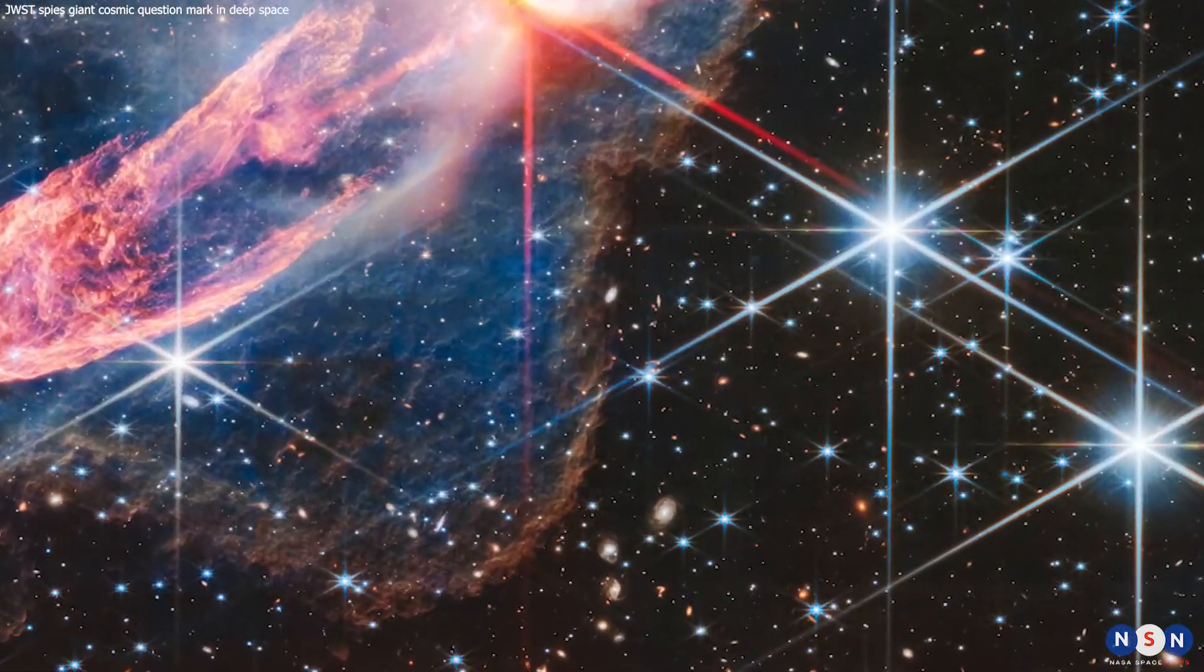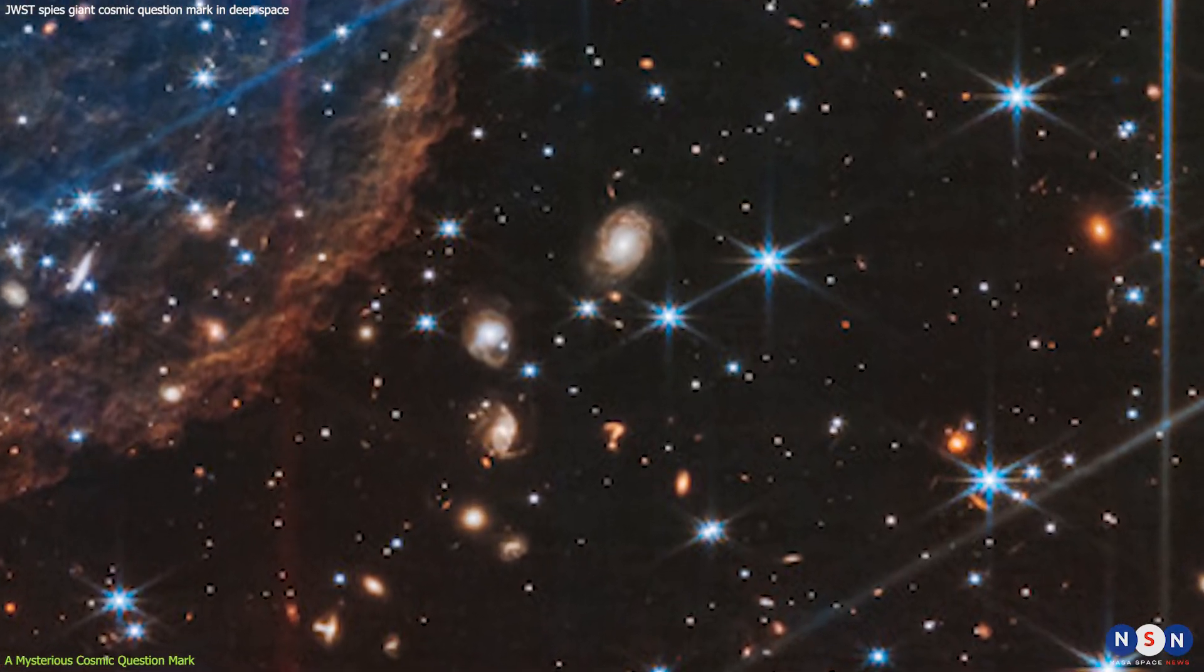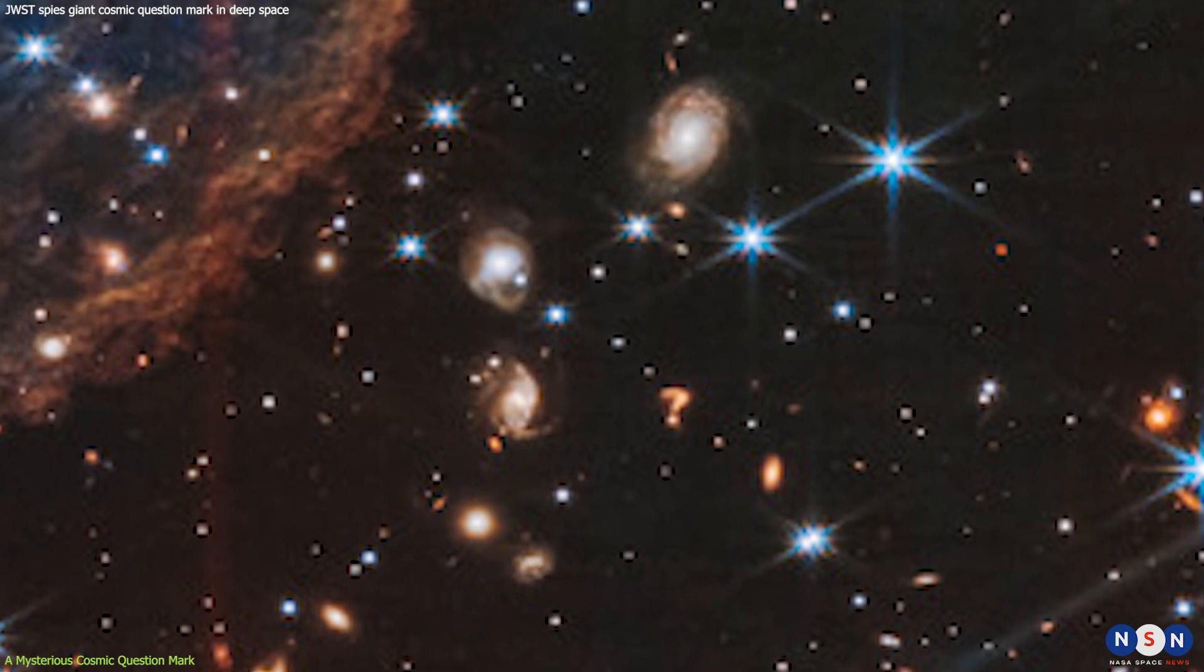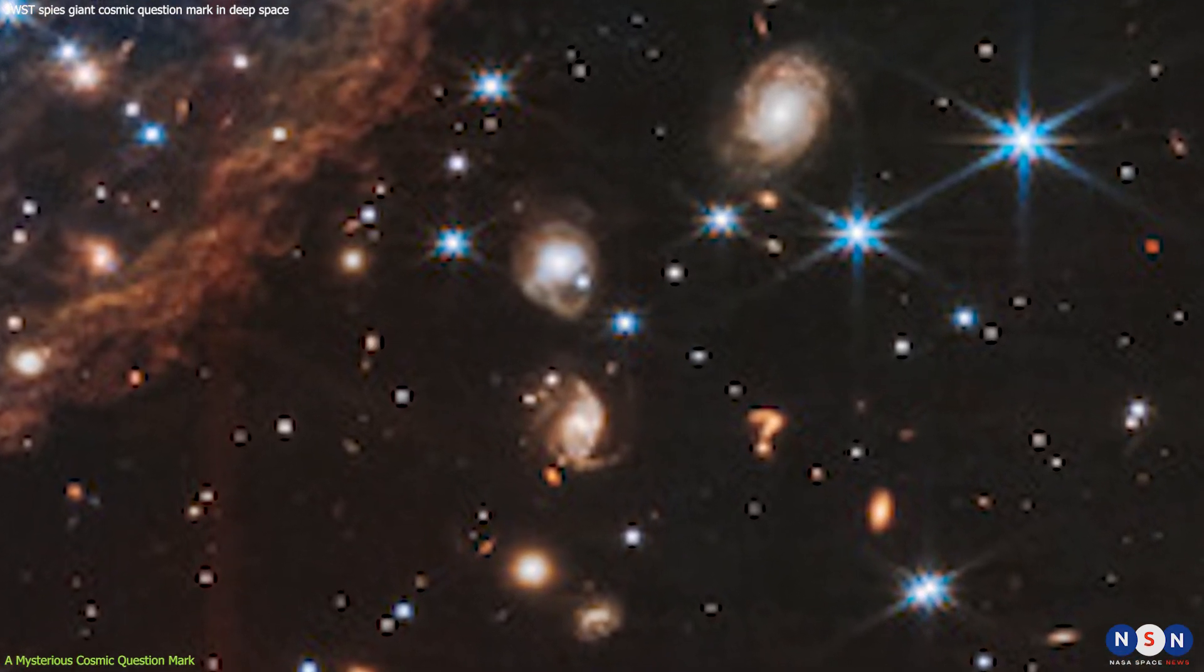Another fascinating discovery made by James Webb was a mysterious cosmic question mark that appeared in one of its images. The image shows a galaxy cluster called ABEL 3827, located about 1.3 billion light-years away.